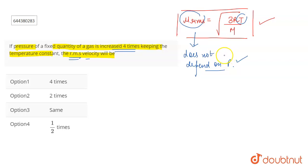...fifteen times, twenty times, it is not going to bother the rms velocity. It is going to remain the same. Okay, so therefore the correct answer for this question is option three.